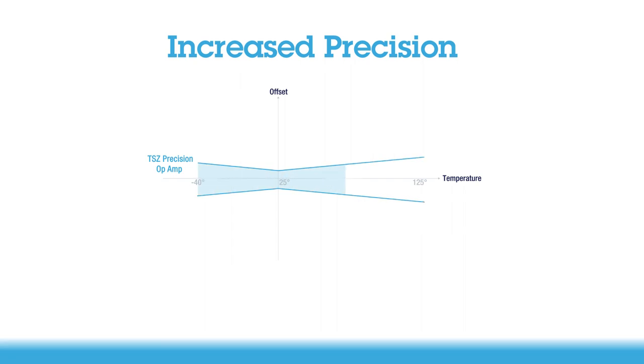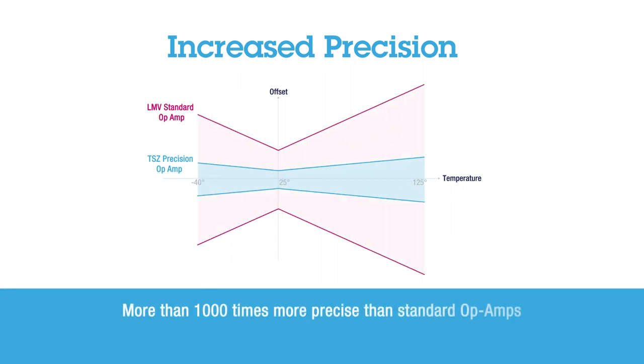Increased precision is the main benefit of this technology. It can be more than 1000 times more precise than standard amplifiers, with input offset voltage going from millivolts down to microvolts.